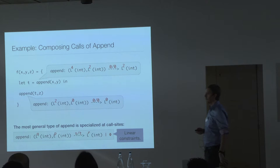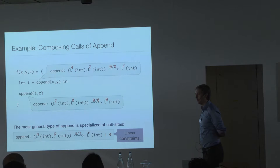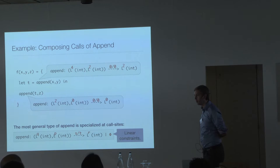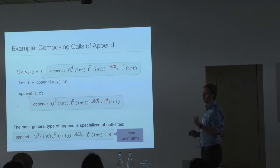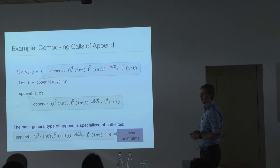The inference is completely automatic. The cost metric is user-defined — you can even insert tick expressions in the program saying 'at this point I want cost 50' or 'cost 100.' The technique is completely parametric in the resource metric.